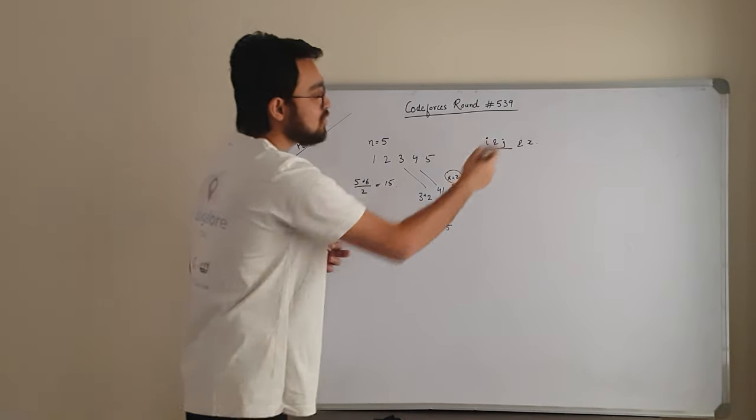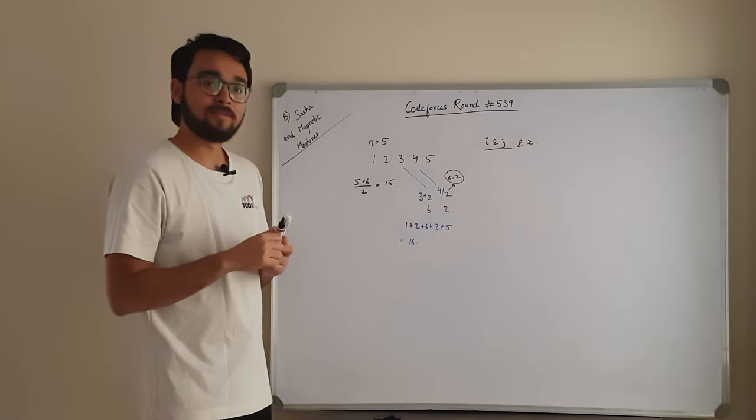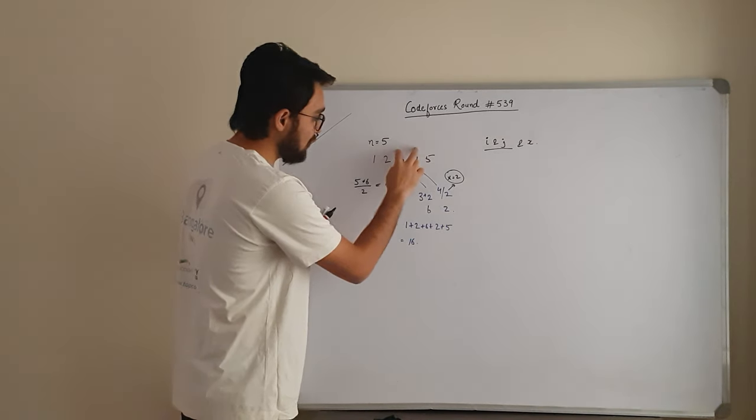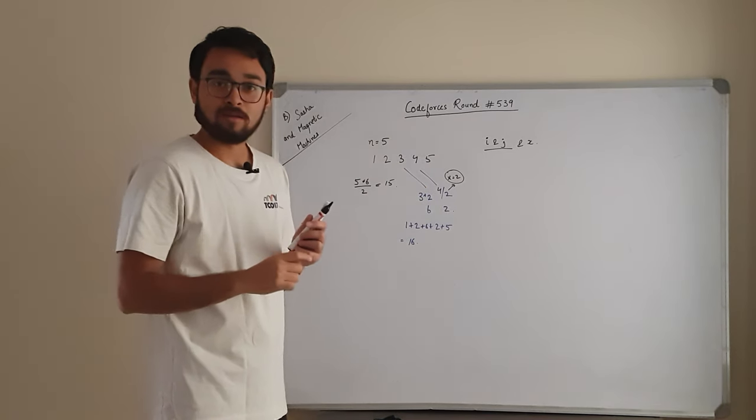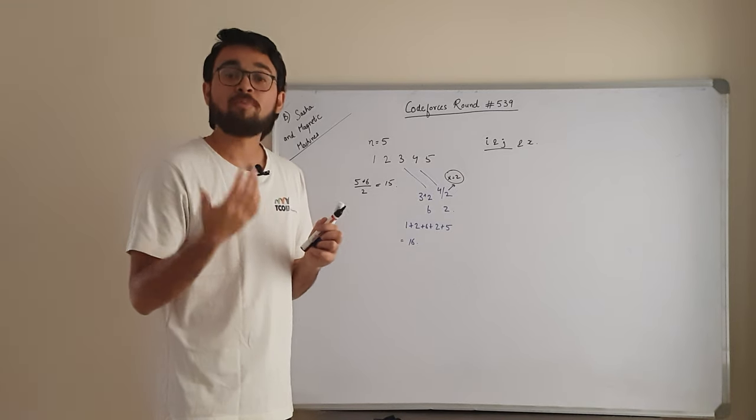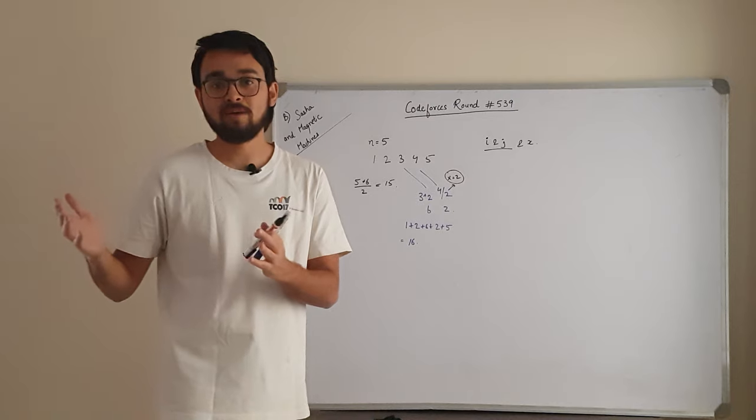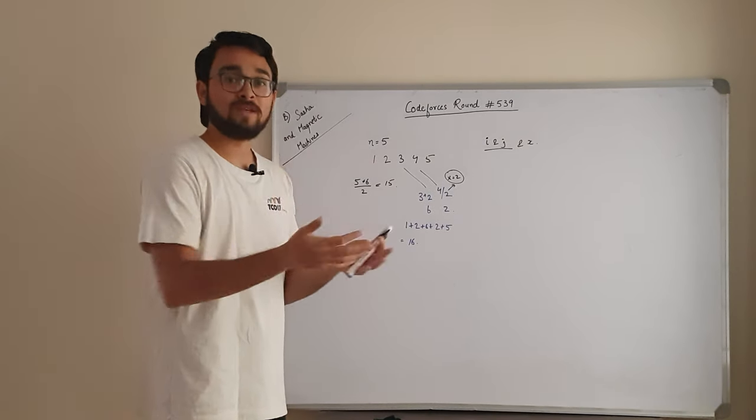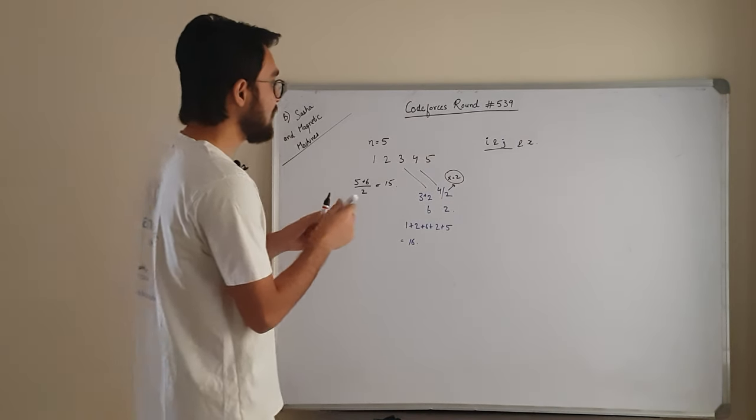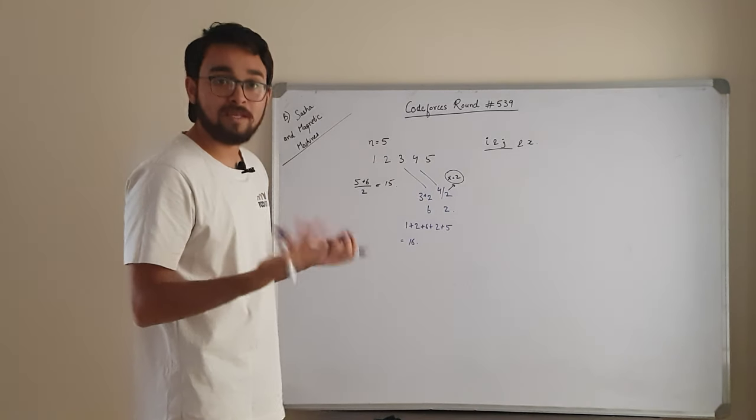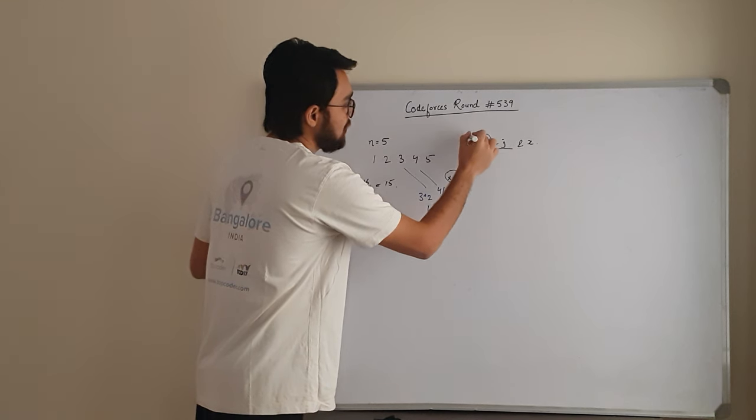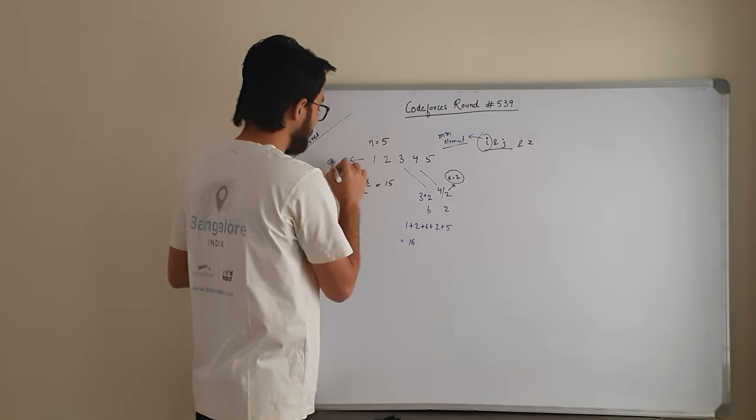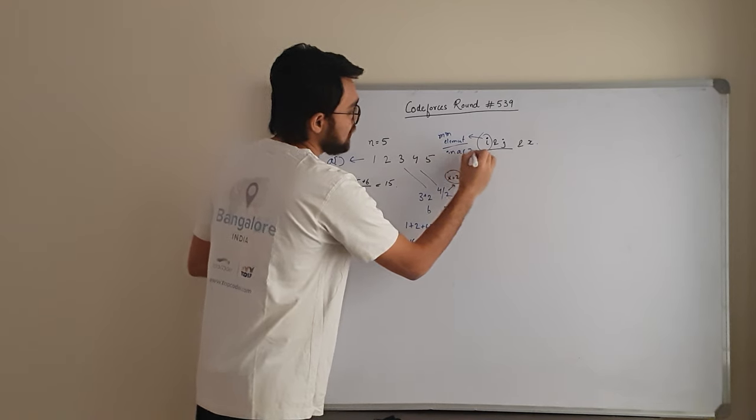So we have three unknowns and we need to find. One good observation to make is whenever you will try to find an element in which you will multiply x, the optimal approach is to select the minimum element. Why? Because if you choose any other element, the cost is going to be more. So the best approach is to choose the minimum element to get the multiplication factor. So from this i and j, if I call this i to be the one in which I am going to multiply, so I know this i is going to be my minimum element. So if this array is a, then minimum element in a is going to be my i.